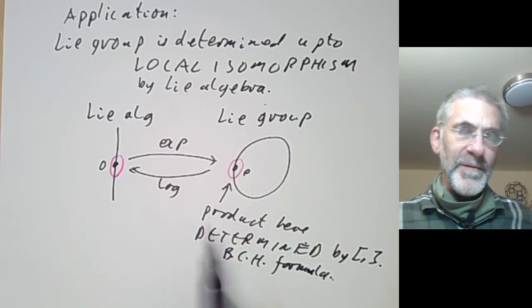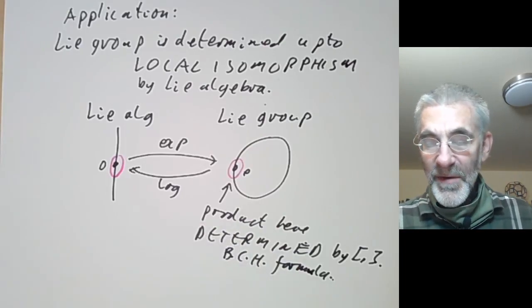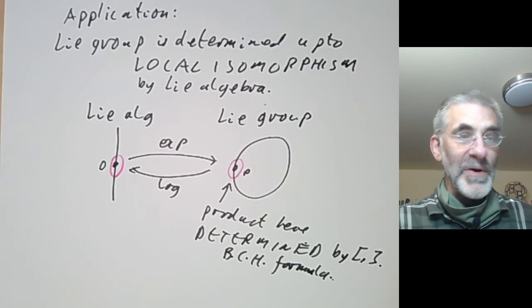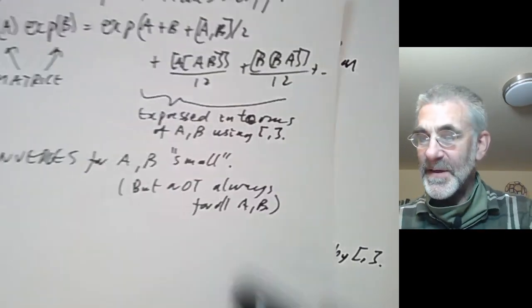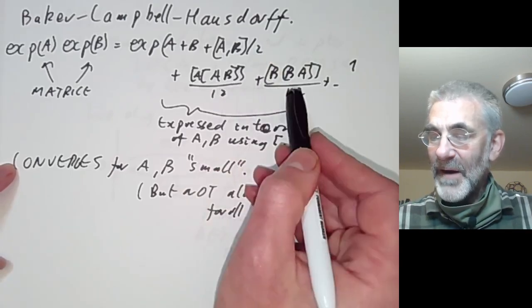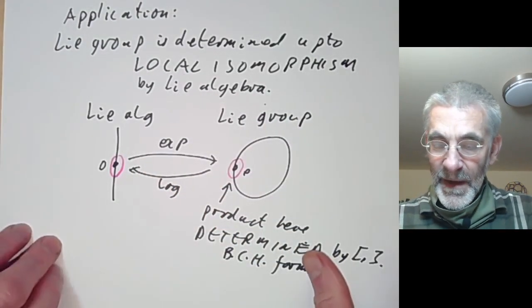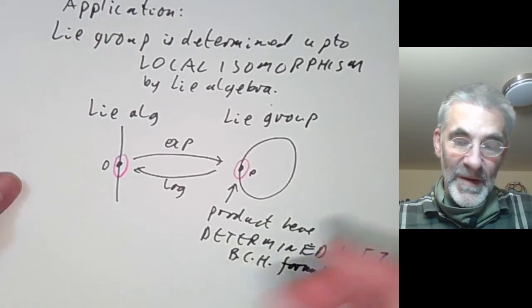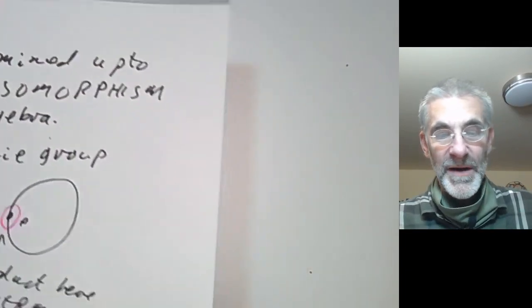Incidentally, this fails over fields of characteristic p greater than zero. There you find that two algebraic groups in characteristic zero can have the same Lie algebra but not be locally isomorphic. You can see this is going to fail in non-zero characteristic because you have to divide by various integers, and you can't do that in characteristic greater than zero. So the reason the Lie algebra works well over the reals is because of the Baker-Campbell-Hausdorff formula.